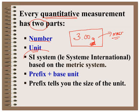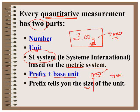The International System of Units is what we'll be using, and it is based on the metric system. It consists of a prefix, which tells you the size of the unit, and then the base unit itself. For example, if I write 'ms,' the base unit is second — that tells me I'm measuring time. The prefix 'milli' tells me the size of that base unit. Milli means one one-thousandth, so millisecond is one one-thousandth of a second.